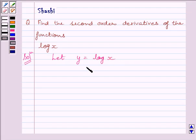Now, differentiating both sides with respect to x, we get dy upon dx is equal to 1 upon x.